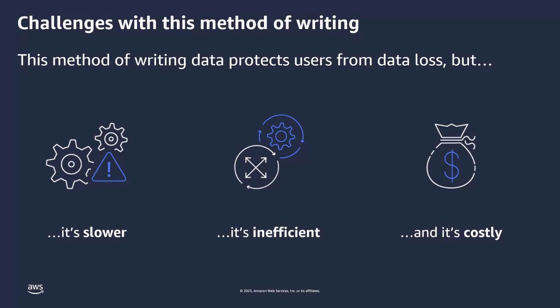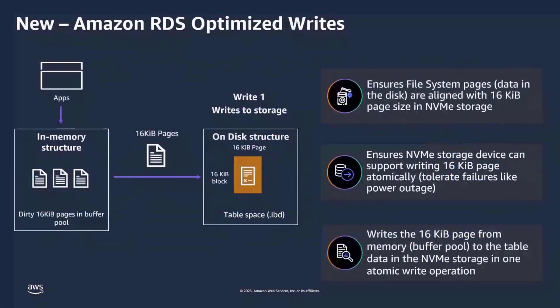As a result, we wanted to provide customers with a more efficient way to safely write their data, and we introduced Amazon RDS Optimized Writes. Optimized Writes will protect customers from data loss without needing to write the data twice. It works by ensuring that all of the data on your disk is aligned to 16-kilobyte pages on the NVMe storage, and these 16-kilobyte pages are written to storage as a single atomic operation. To write files to table storage durably in one step, Optimized Writes uses a feature called Torn Write Prevention, which is a new feature of the AWS Nitro system.